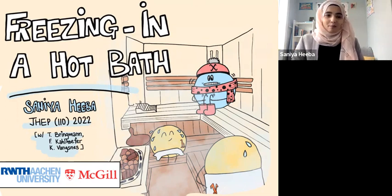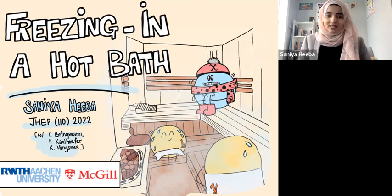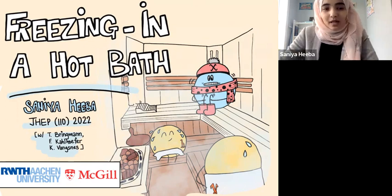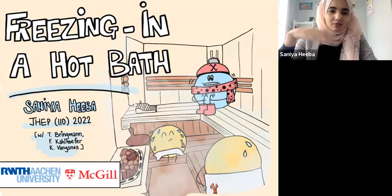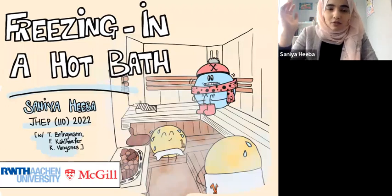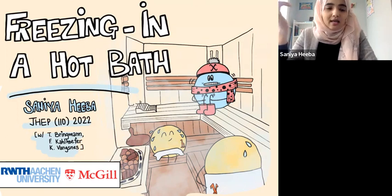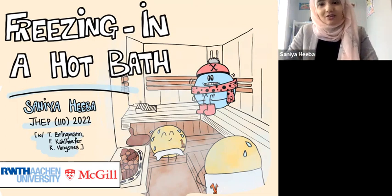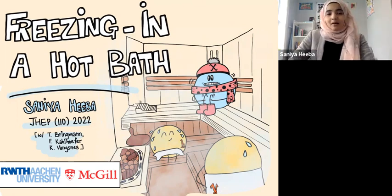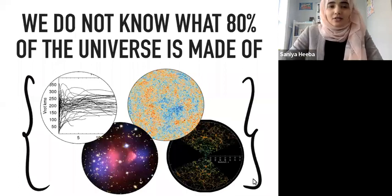I'm Sanya, currently a postdoc at McGill, but what I'm going to be talking about today is some of the work I did when I was a PhD student — which was like 500 years ago, in 2021 — back when I was in Aachen. I'll be talking about freeze-in of dark matter particles and some technical subtle caveats we have to keep in mind when we do these calculations and how they affect our predictions for the dark matter abundance. This was work done with Torsten, Felix, and Christian, and you can find it on the paper reference on screen.